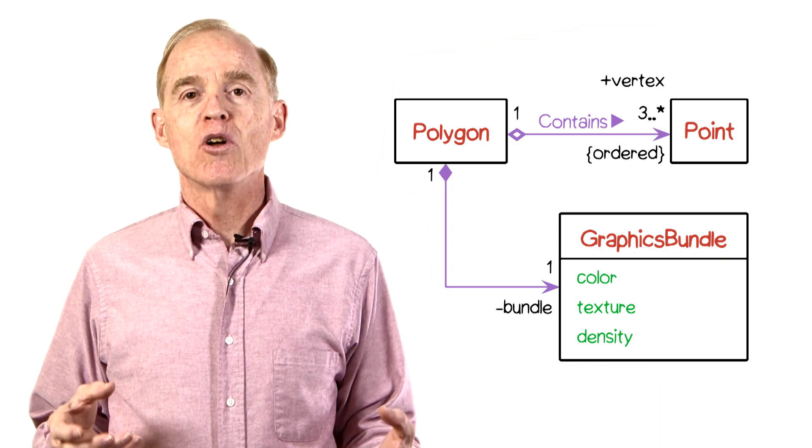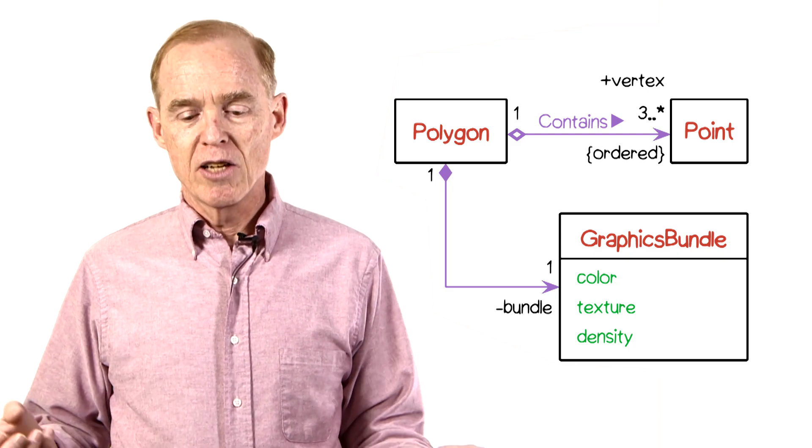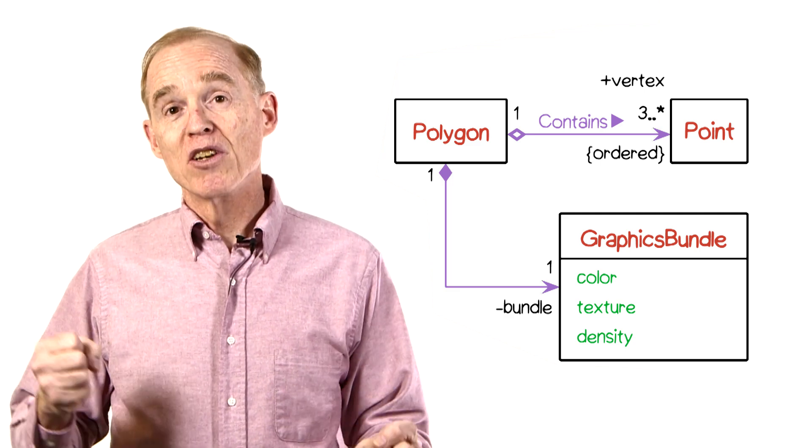Here's an example of a UML class diagram containing two relationships and three classes. We have the polygon class, the point class, and a graphics bundle class.